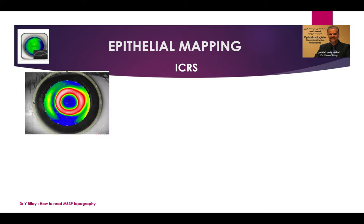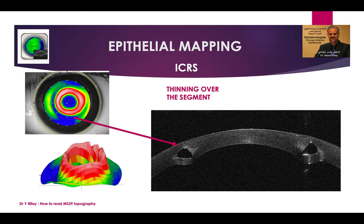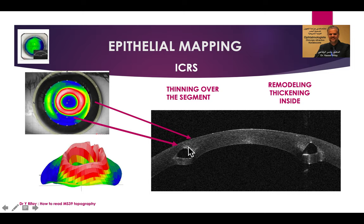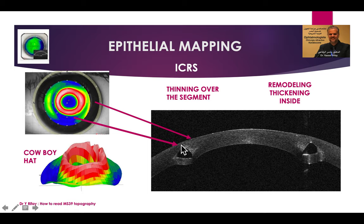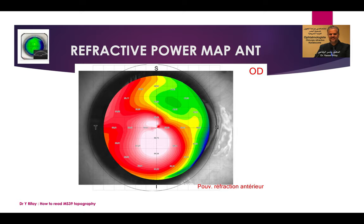This is the behavior of epithelial mapping after intracorneal ring segment implantation. We see epithelial thinning over the segment and a remodeling effect inside — the epithelium fills the gap created by the ring, producing a red area of thickening just inside the ring. You also have the normal thinning at the apex of the keratoconus. This creates a characteristic cowboy hat pattern.